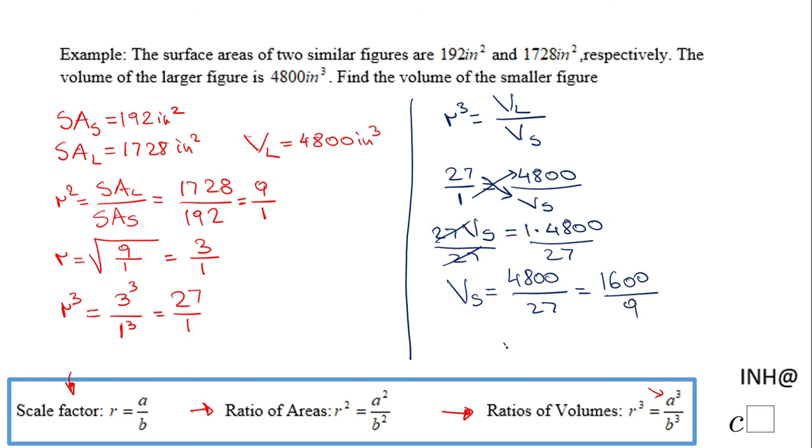So the volume of the smaller figure is 1600 over 9 cubic inches, and that's it. If you enjoyed this, don't forget to click the like button and come back on C Square for more help. Thank you.